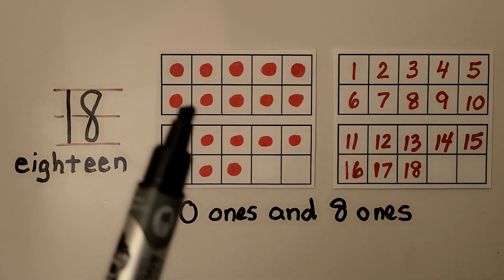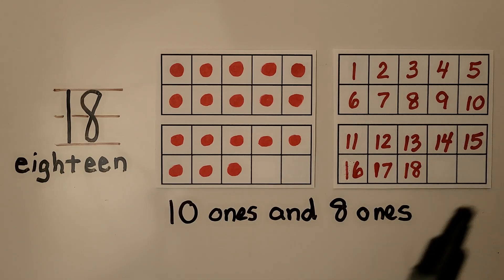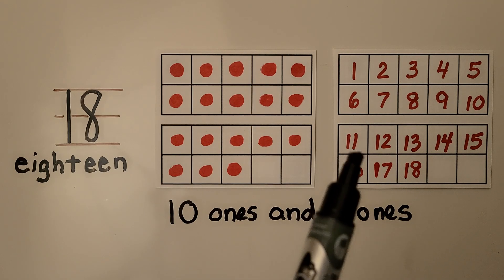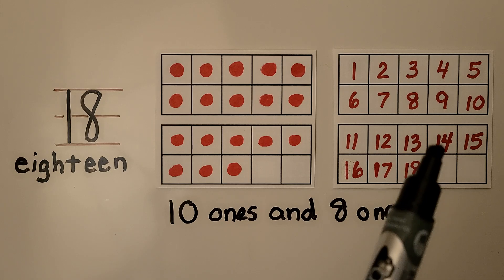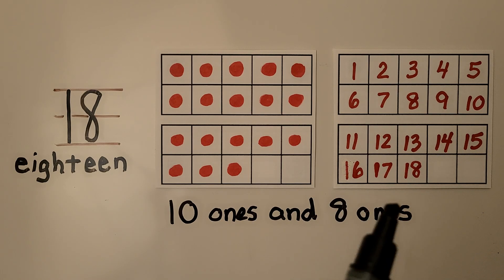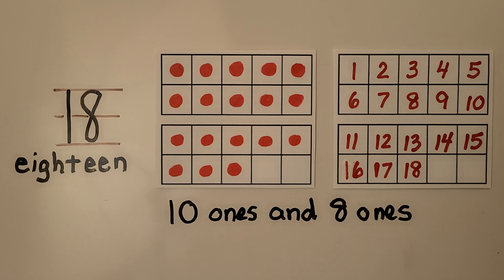The full 10 frame on the top is 10. And we can count on 11, 12, 13, 14, 15, 16, 17, 18. 18 is 10 ones and 8 ones.